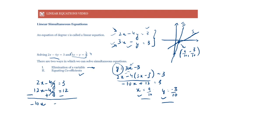We get minus 10x, and the minus 4y plus 4y cancels, giving minus 9. So again x equals 9 by 10, and substituting back gives y equals minus 3 by 10. The answer is the same in both cases. This method seems easier as it's done in one step. Always make the coefficient of one variable the same — here we only needed to multiply the second equation by 4, but sometimes we may need to multiply both equations by a constant.